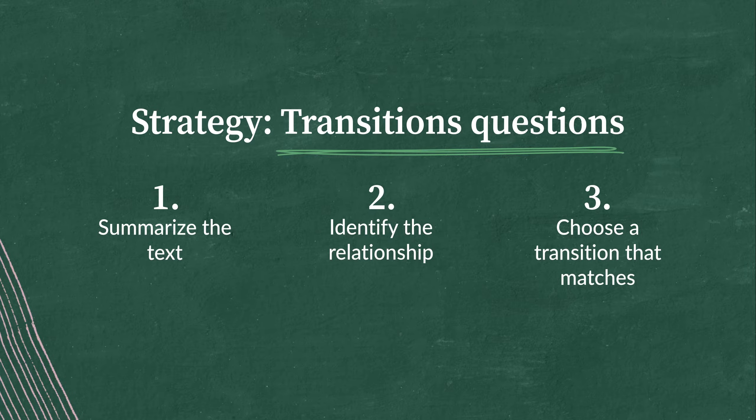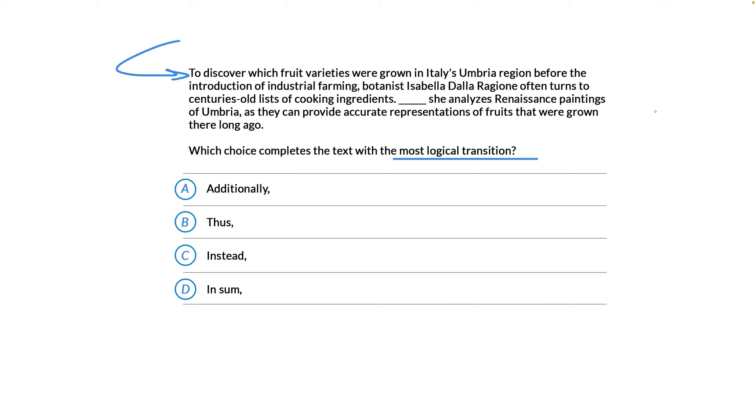Alright, let's head back to our question and try this out. But first, let's cover up the choices so that they don't distract us from really understanding what kind of transition we need. Okay, step one, let's summarize the text.